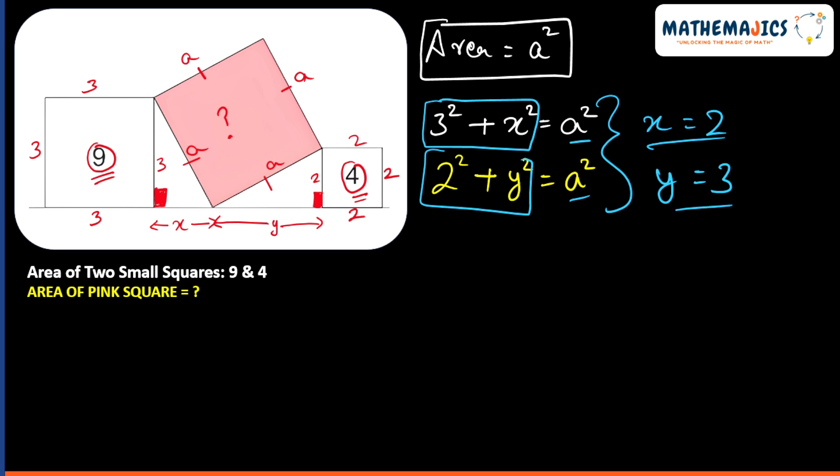Now since we have found out the value of x and y, we can easily find the value of a² using any equation. So a² will be 3² - instead of x I'll use 2 - plus 2². So a² will turn out to be 9 + 4, which gives a² as 13. So the area of pink square will be a² equals 13. That will be our final answer.